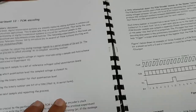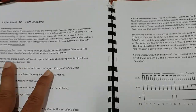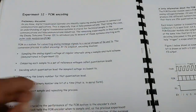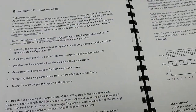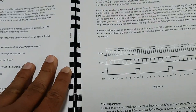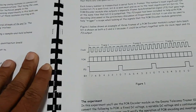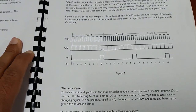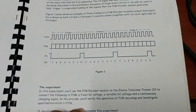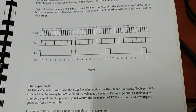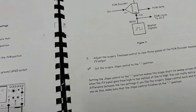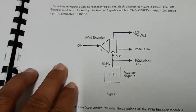This experiment is divided into two parts: the first is PCM encoding and the second is PCM decoding. We will do the first experiment, PCM encoding, and then move on to the second, PCM decoding. Now let's look at the block diagram of this experiment.